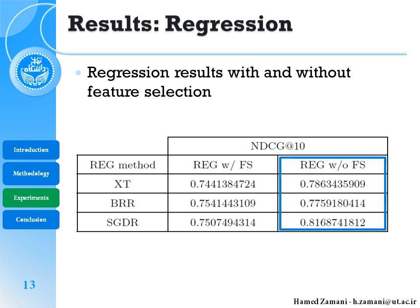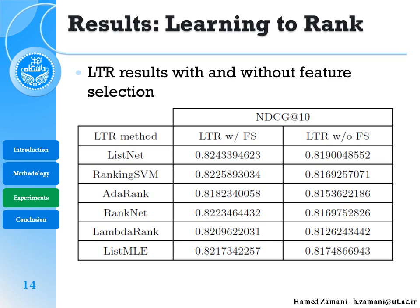The best regression model for this task is Stochastic Gradient Descent, which achieves much higher results than the other regression models. For the learning-to-rank methods, the pattern is different: results after performing feature selection become higher, and all results are close to each other and higher than the regression results.